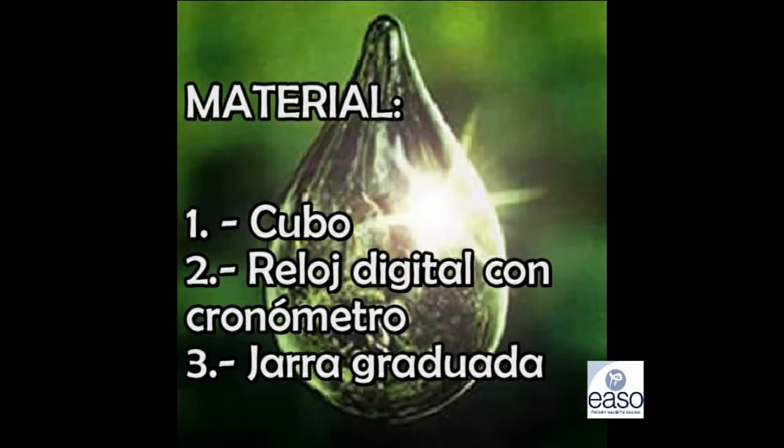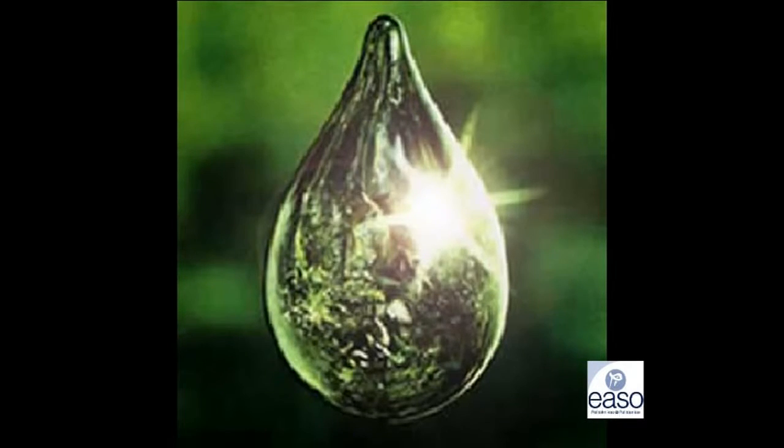1. Cubo para recoger el agua vertida. 2. Un reloj cronómetro. 3. Una jarra medidora de las que se utilizan en cocina. Veréis que nosotros hemos utilizado una probeta de laboratorio, pero con la jarra vas a hacerlo exactamente igual.